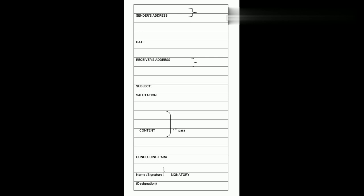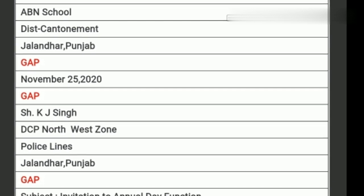Let me show you the format. First, sender's address — leave one line — date — leave one line — receiver's address — leave one line — subject — then salutation with no gap between these two. After that, leave a line and start with the first paragraph of the content, then conclude the paragraph, and at last write the signatory section with name or signature and the designation below in brackets.